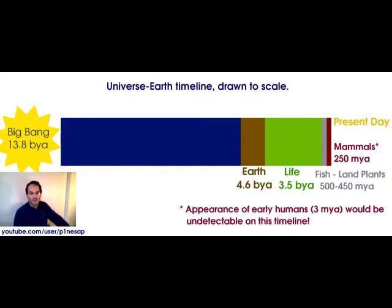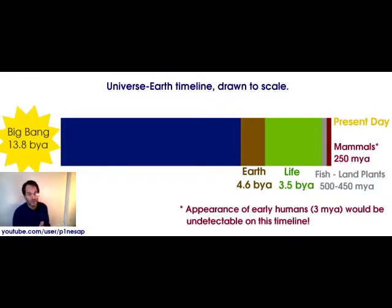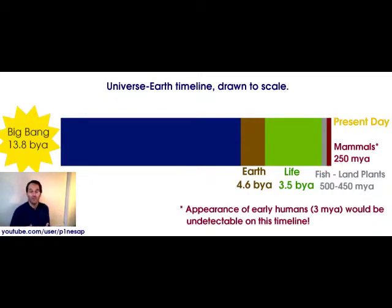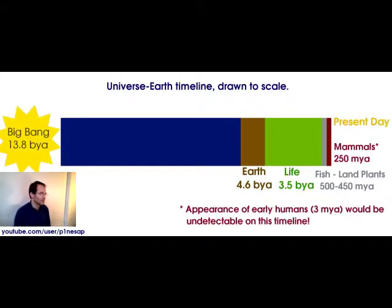First, here's my universe-Earth timeline. These timelines have been drawn to scale — that's what I set out to do, to have a visual reference of how things are laid out in history. A little technical note: I set this up in GIMP. Since the universe is 13.8 billion years old, I set it up as 1380 pixels wide, then through division, subtraction, and converting millions of years in terms of billions of years, I was able to calculate and show in colors the different periods of history.